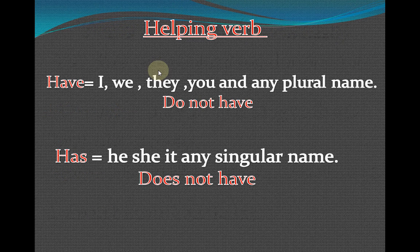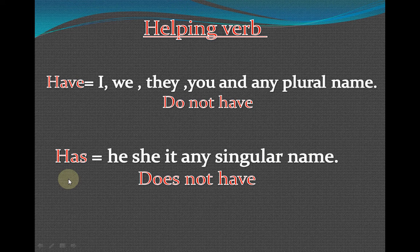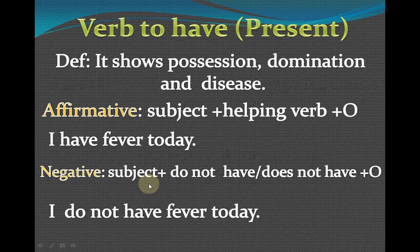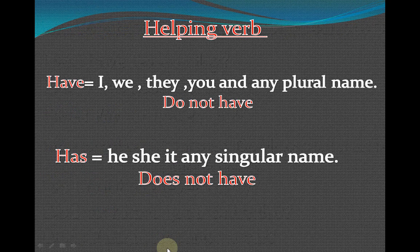'Has' is used with: he, she, it, and any singular name like Ali, Aliza, or Farhan. In an affirmative sentence we use 'has': 'Farhan has a car.' In a negative sentence we use 'does not have': 'Farhan does not have a car.' In interrogative plus negative: 'Does Farhan not have a car?'